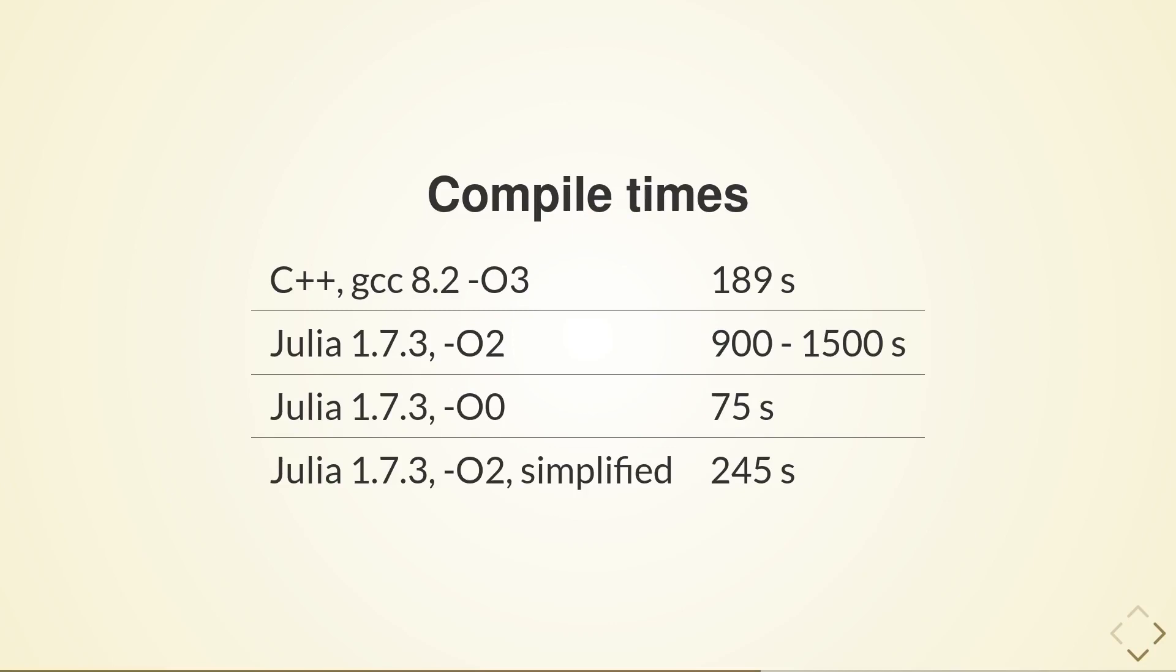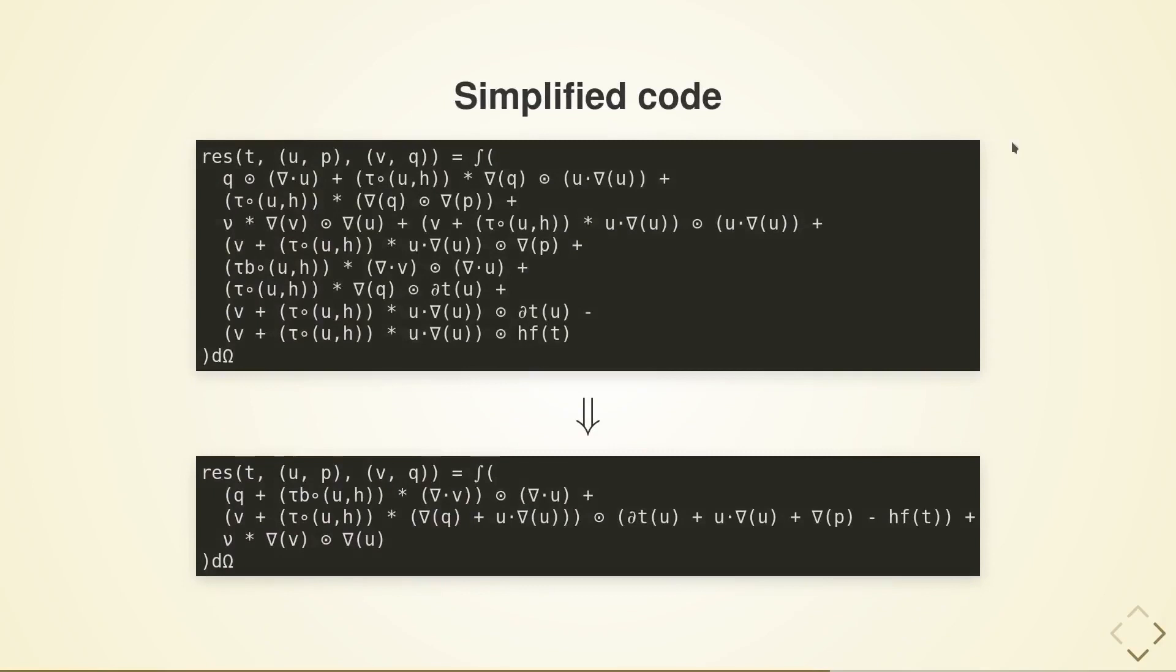Of course, this is comparing two quite different approaches to the problem, and we have to keep in mind that the tested C++ framework is less expressive than GridApp. We can also see that the optimization level for Julia has a great effect on the compile times. Fortunately, in GridApp, we can also simplify the code, which further reduces the compile time. So here we simply grouped some terms together, resulting in a Navier-Stokes solver that fits in three lines, even if you apply strict line length limits.